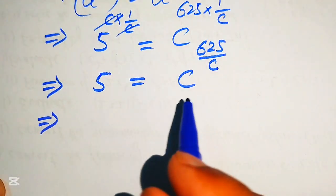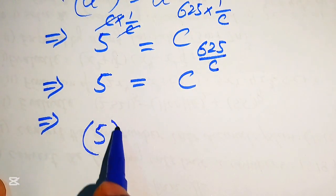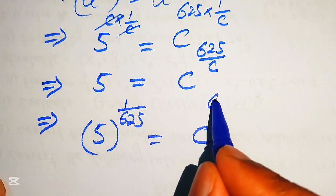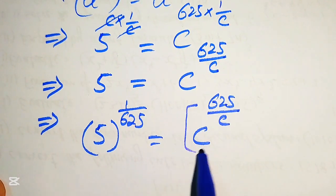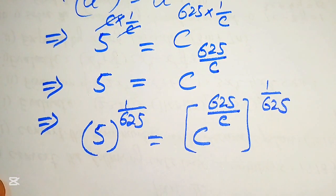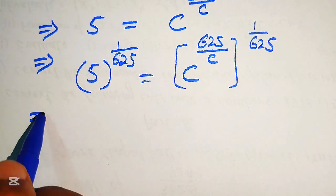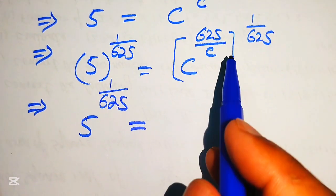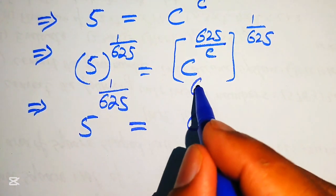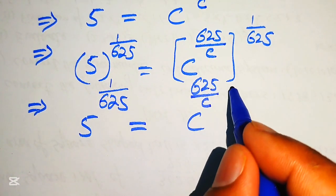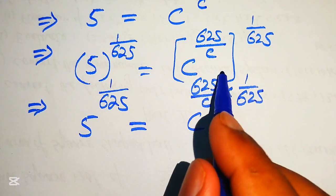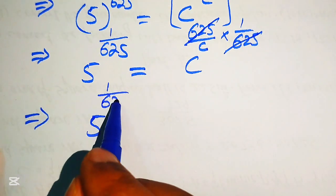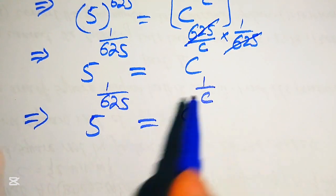To move 625 to the left hand side, we raise both sides to the power of 1 over 625. On the left we get 5 to the power of 1 over 625, and on the right we multiply the exponents: 625 over c times 1 over 625. That 625 cancels, giving us 5 to the power of 1 over 625 equals c to the power of 1 over c.